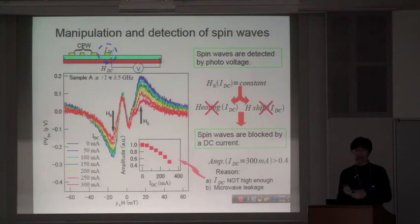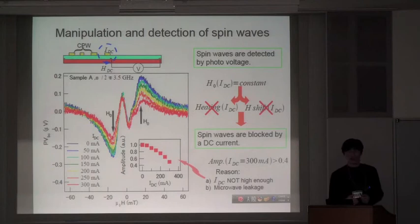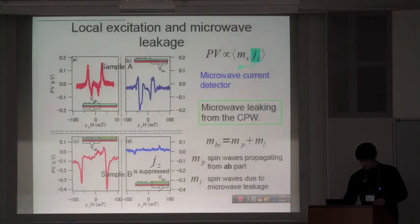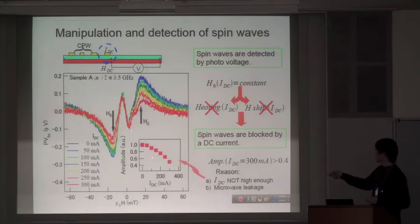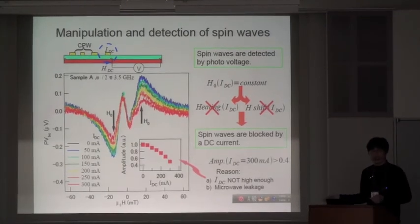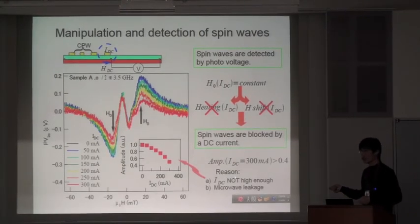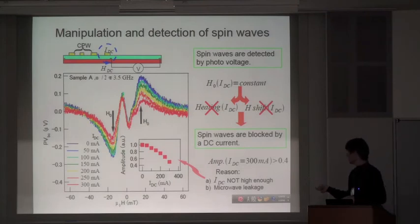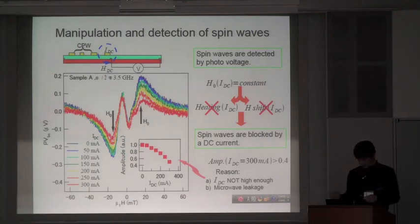After this, we already show you how to excite the spin view, and how to detect it by voltage, by resistance, and how to manipulate. That we finish a spin-wave device. And also here, I plotted the amplitude as a function of the DC current applied here, and we see this amplitude doesn't go to zero. We estimate there's two reasons. One is the DC current we applied is not high enough. Another reason is there's a microwave leaking problem.